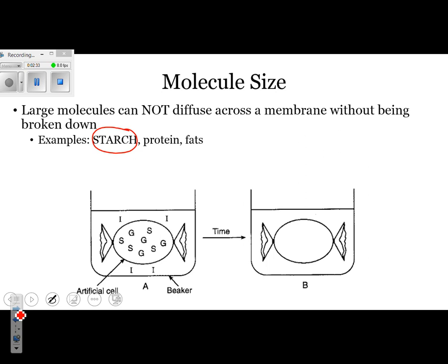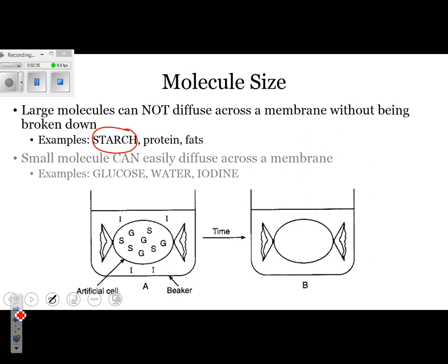The other molecules we're going to look at are small molecules. Small molecules can diffuse across the membrane. All three of these are important examples, but in this case we're going to look at glucose and iodine.